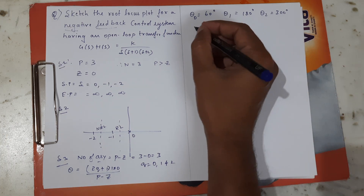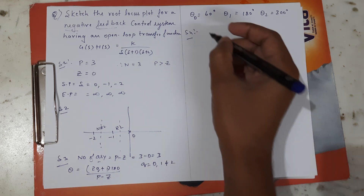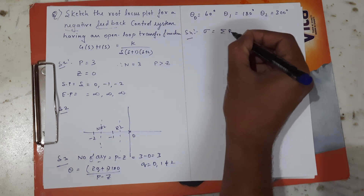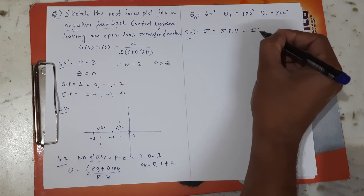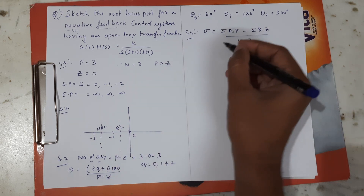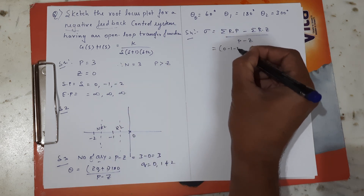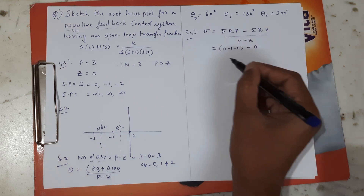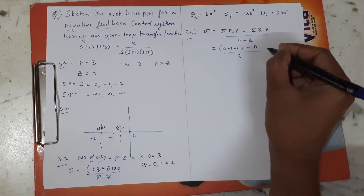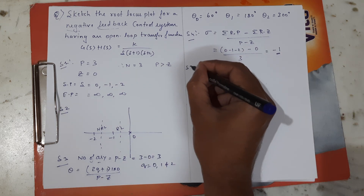Step 4: determine the centroid. Centroid = (sum of real parts of poles − sum of real parts of zeros) / (P−Z). The real parts of poles are 0, -1, -2, and we have no zeros. So centroid = (0−1−2) / 3 = −1. The centroid is at −1.